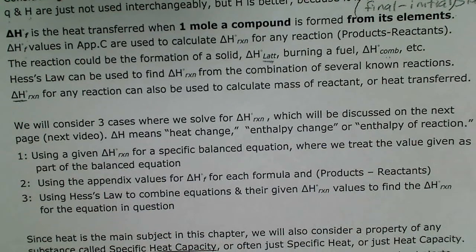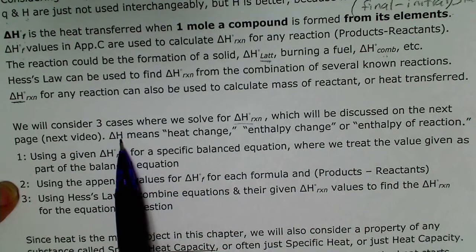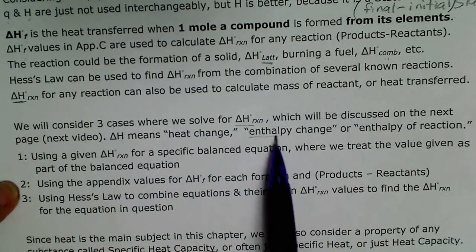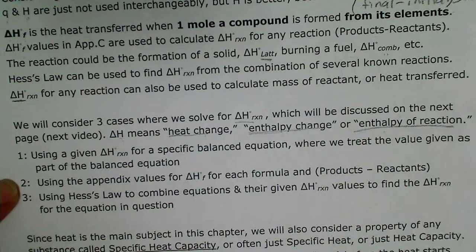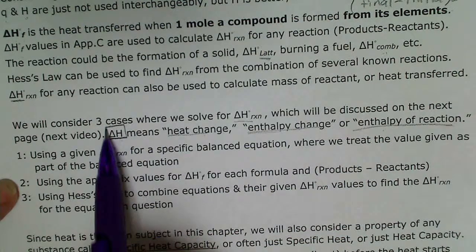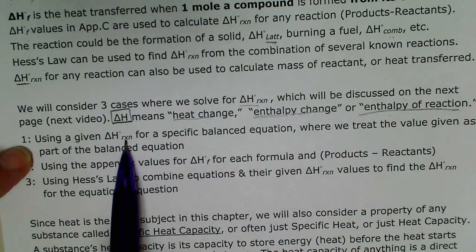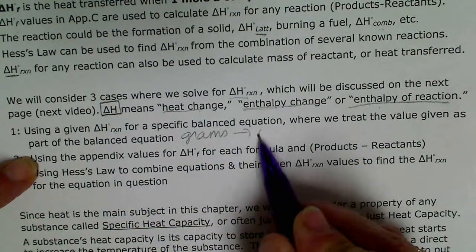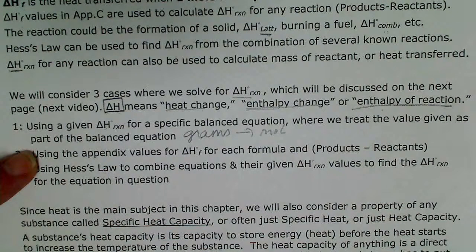We're going to look at three different ways to solve for the heat that accompanies any reaction — we might say delta H, heat change, or enthalpy change; these all mean the same thing. In the first method, we're given a delta H value for a specific reaction and then convert from grams to moles, then use the balanced equation where that energy value is part of the equation.